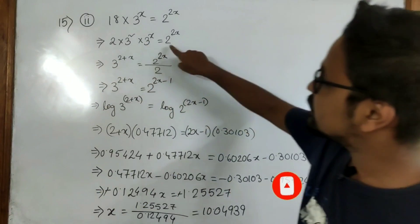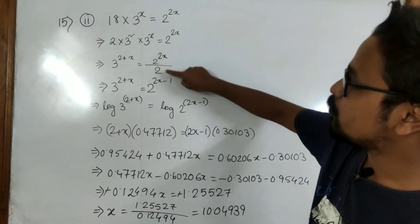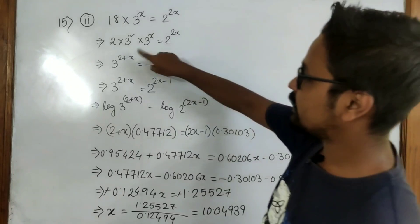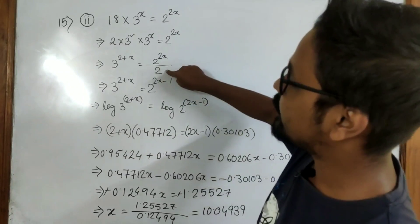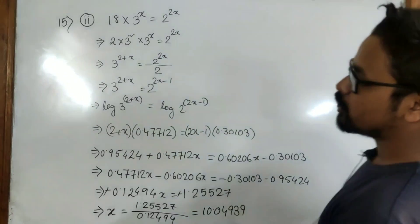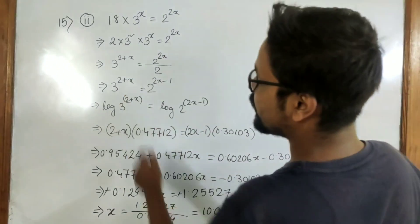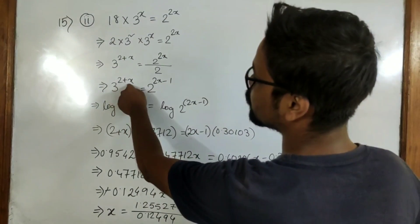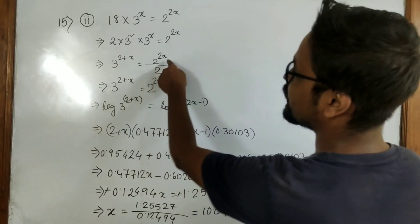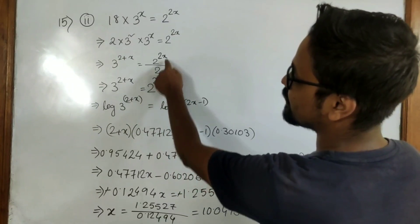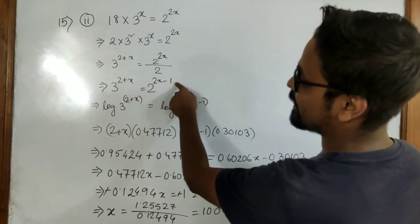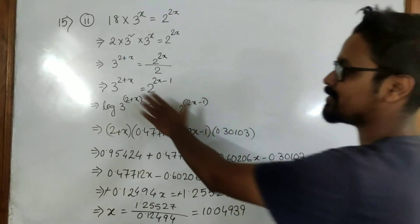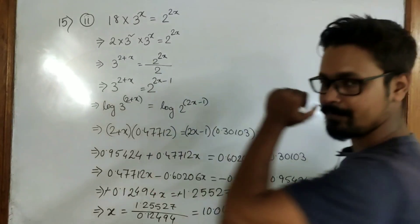The two side changes and comes down. After side changes, it becomes divided by 2. So here we have 3 to the power 2 plus x, and here since it is divided, the base is the same so the power becomes minus. So it will be 2x minus 1. I hope it is clear up to here.